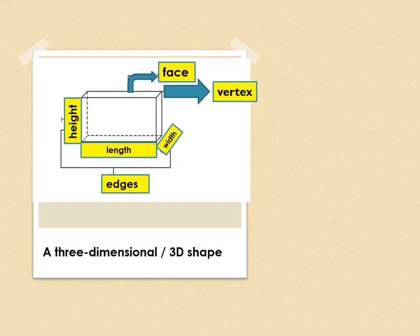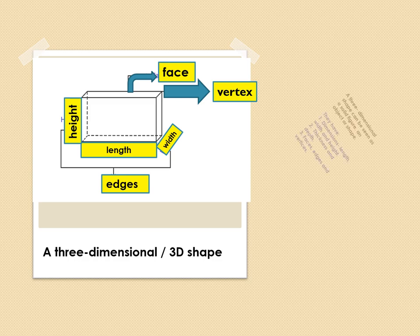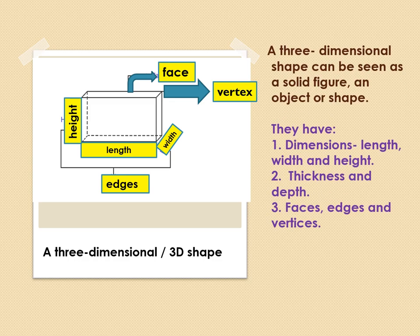A three dimensional shape or 3D shape has a face, vertex, width, length and height. They have dimensions which is their length, width and height. It has thickness and depth. It has faces, edges and vertices.